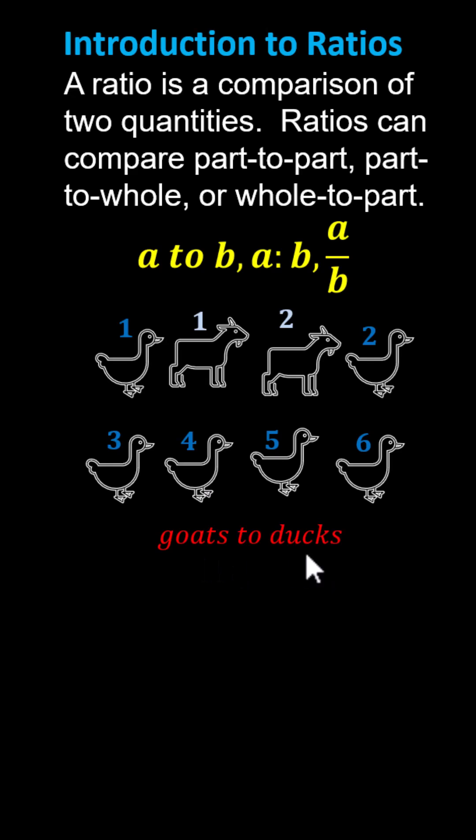Which again can be written in any of these three ways. However, ratios can also be simplified like fractions. If we consider the fraction form of the ratio two to six, notice two and six share a common factor of two. To form the simplified ratio, we divide both two and six by two.